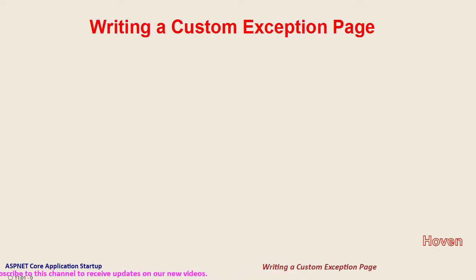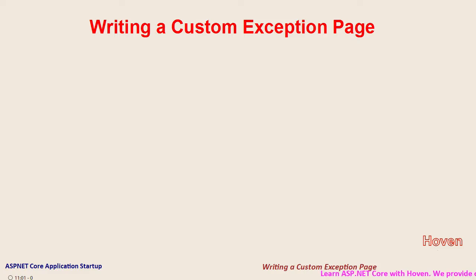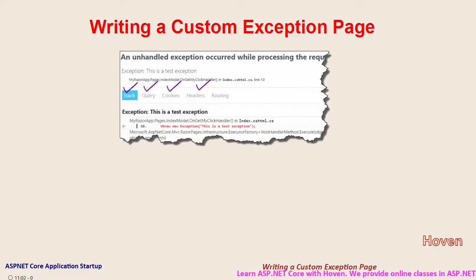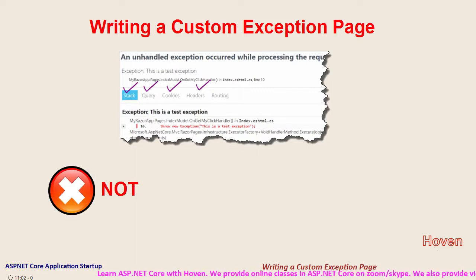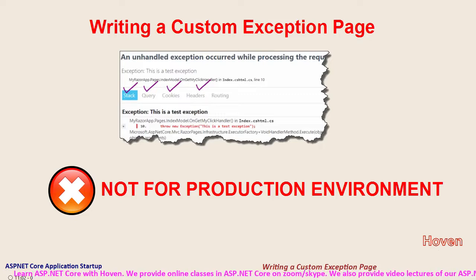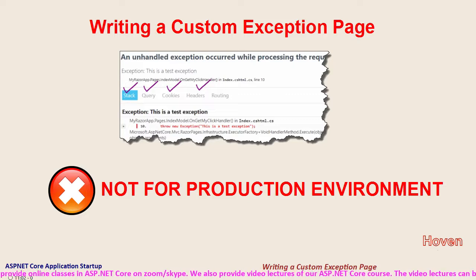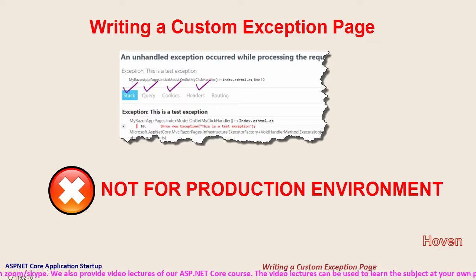This tutorial continues our previous tutorial where we learnt that if an application is running under development environment, then ASP.NET Core provides a use developer exception page middleware that catches unhandled exceptions and provides detailed information about the snapshot state of the application. But that feature is not recommended for production environment because it could potentially be used by a hacker.